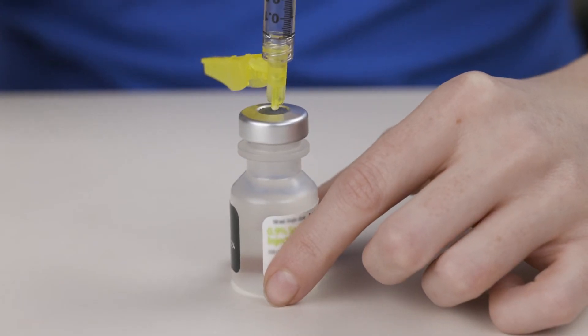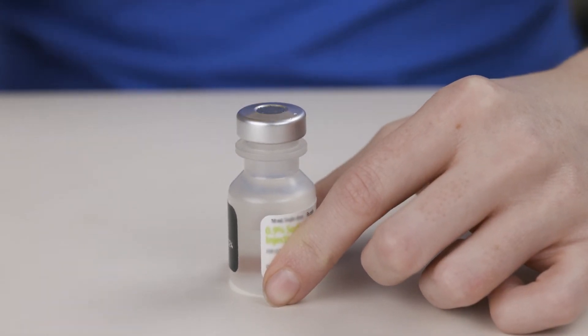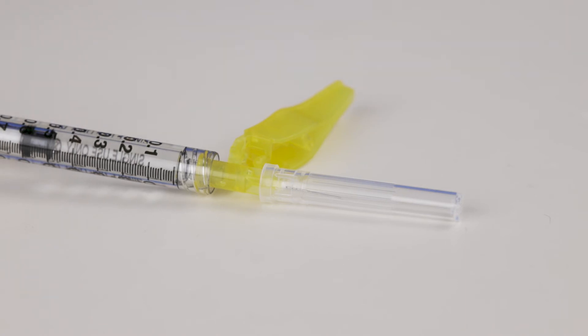Turn the vial upright and remove the needle. Rest the syringe in the needle cap and on a clean surface as you prepare your injection site.